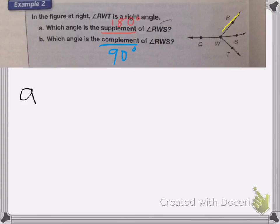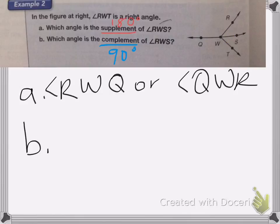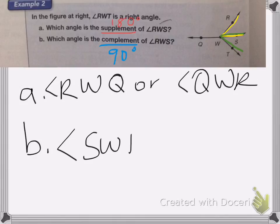So that angle is RWQ — don't forget the angle sign — or you could say angle QWR. Now part B is asking which angle is the complement of RWS. We have RWS, and we want the complement, which means it equals 90 degrees. A 90-degree angle forms a square. So I have RWS, and I need to add SWT to get that 90 degrees. So it's going to be angle SWT or angle TWS.